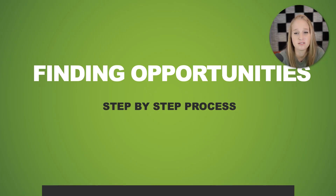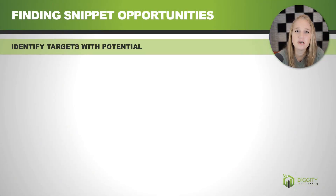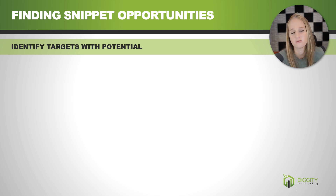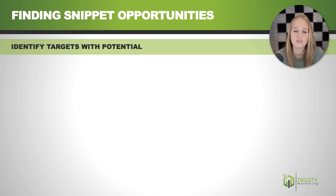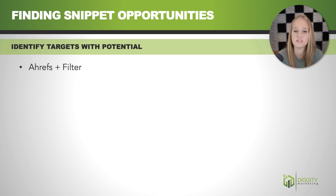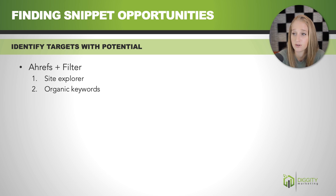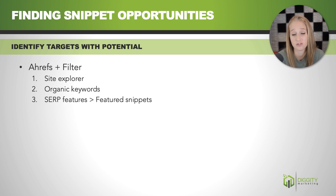When finding these opportunities, you want to make sure you're only going after targets that have potential, because just because you rank for a keyword on page one doesn't mean you're going to actually get that snippet. The way I do this is using Ahrefs. You go into Ahrefs, then Site Explorer, look at the organic keywords, select SERP features and featured snippets, and then isolate only keywords that you're ranking in the top five for.